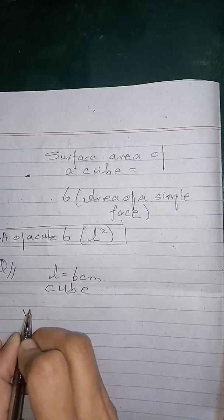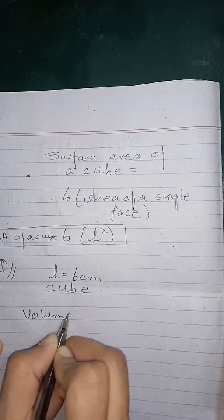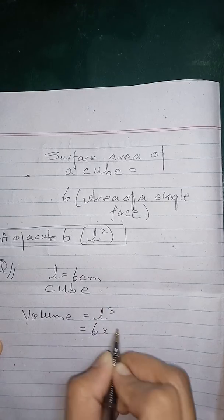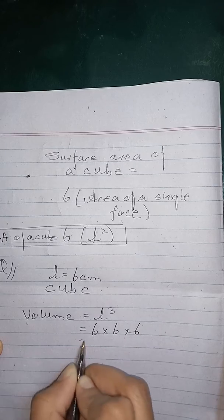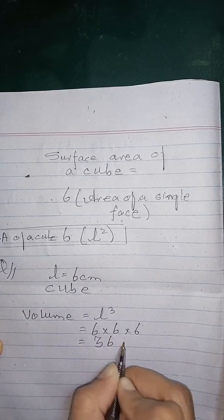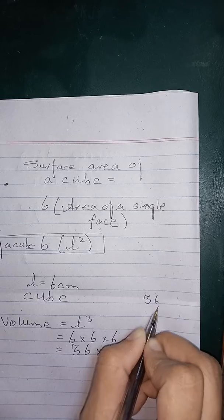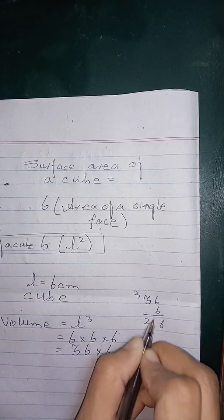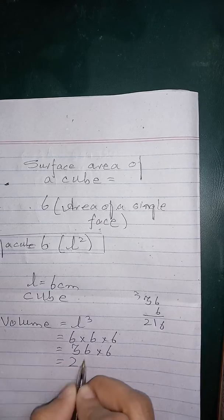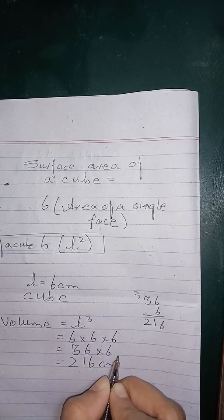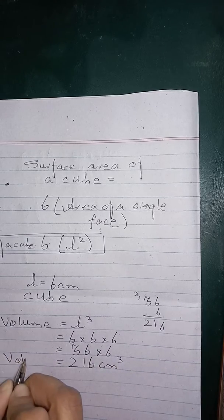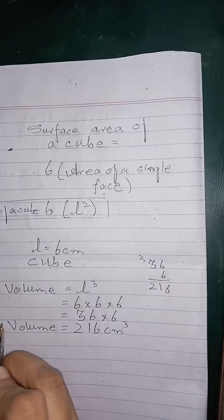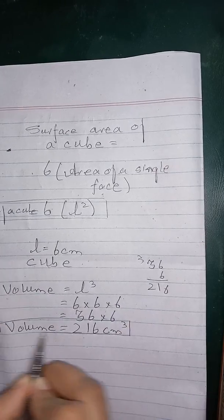The volume will be L cube, 6 times 6 times 6, 36 times 6 and we can do 216 cm cube. So the volume of this cube will be 216 cm cube.